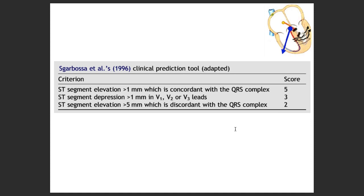Concordance with the QRS, you give a score of 5, even if you know 1 millimeter as well. Score of 3 when there is depression, and when there is discordance with the QRS, you will give a score of 2.